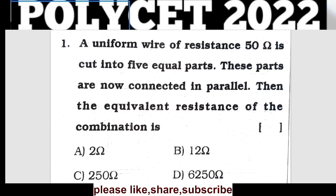Since 50 ohms is cut into 5 equal parts, R1 = R2 = R3 = R4 = R5 = 10 ohms each. In parallel: 1/R = 1/10 + 1/10 + 1/10 + 1/10 + 1/10 = 5/10 = 1/2. Therefore R = 2 ohms. Option A is the correct answer.